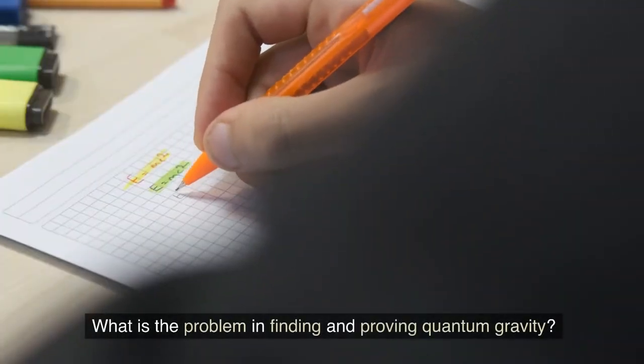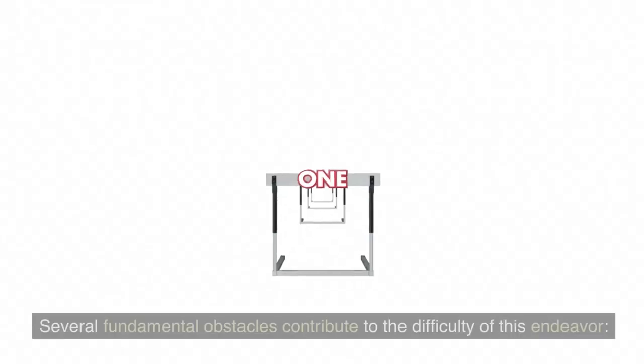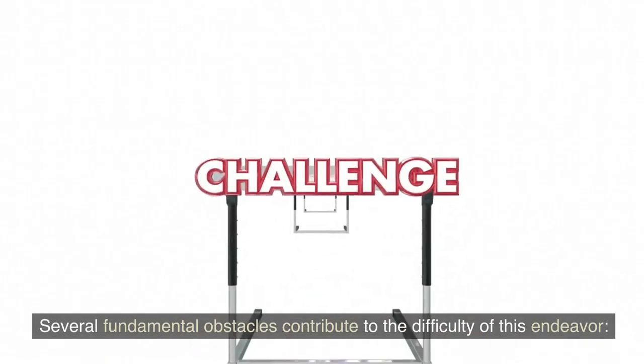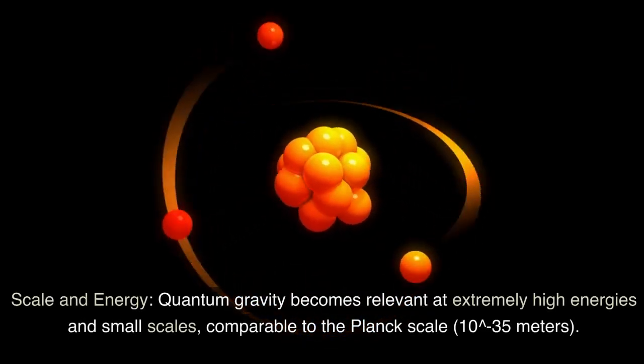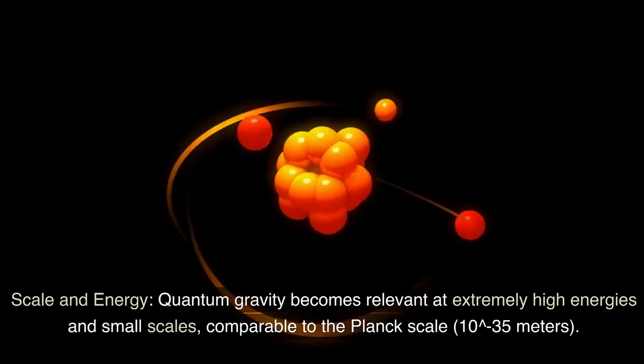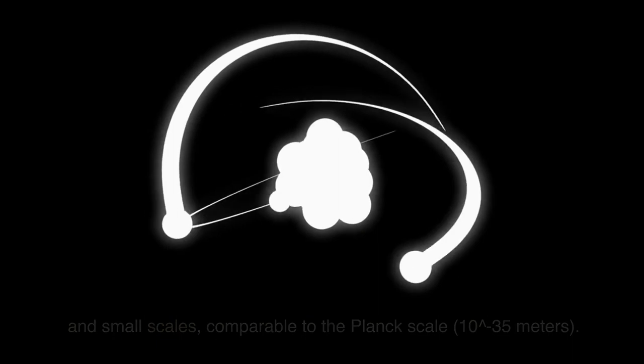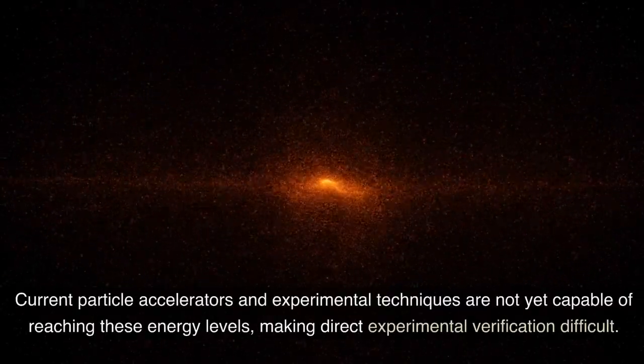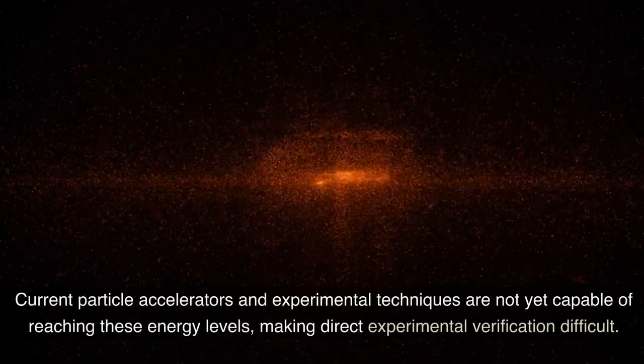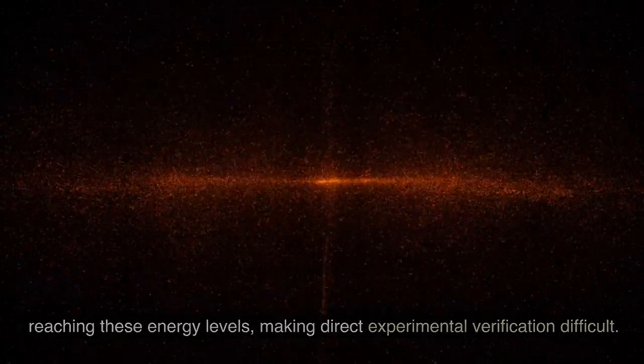What is the problem in finding and proving quantum gravity? Finding and proving a theory of quantum gravity is a significant challenge in the field of theoretical physics. Several fundamental obstacles contribute to the difficulty of this endeavor. Scale and energy. Quantum gravity becomes relevant at extremely high energies and small scales, comparable to the Planck scale, 10 to the negative 35 meters. Current particle accelerators and experimental techniques are not yet capable of reaching these energy levels, making direct experimental verification difficult.